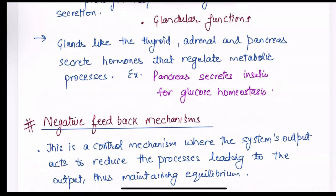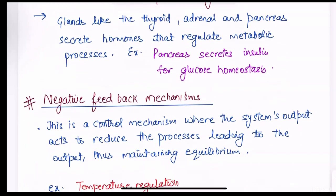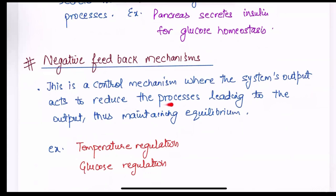Negative feedback mechanisms. So this is a control mechanism where the system's output acts to reduce the processes leading to the output, thus maintaining equilibrium. For example, temperature regulation and glucose regulation.